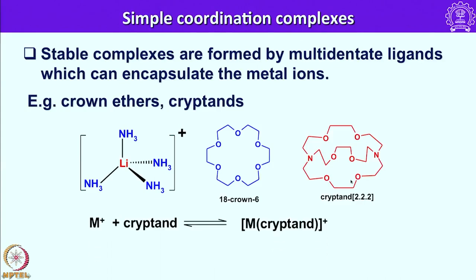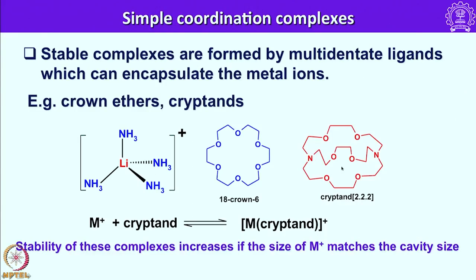When you take a cation and add cryptand, the cryptand essentially encapsulates this cation in its fold through the coordination of nitrogen as well as oxygen atoms with their lone pairs. The stability of these complexes increases if the size of the M+ cation matches the cavity size. If the cavity size is comparable to the size of the alkali metal cation, those compounds are more stable, and especially when we want to stabilize some of these cations we have to use precise crown ethers.